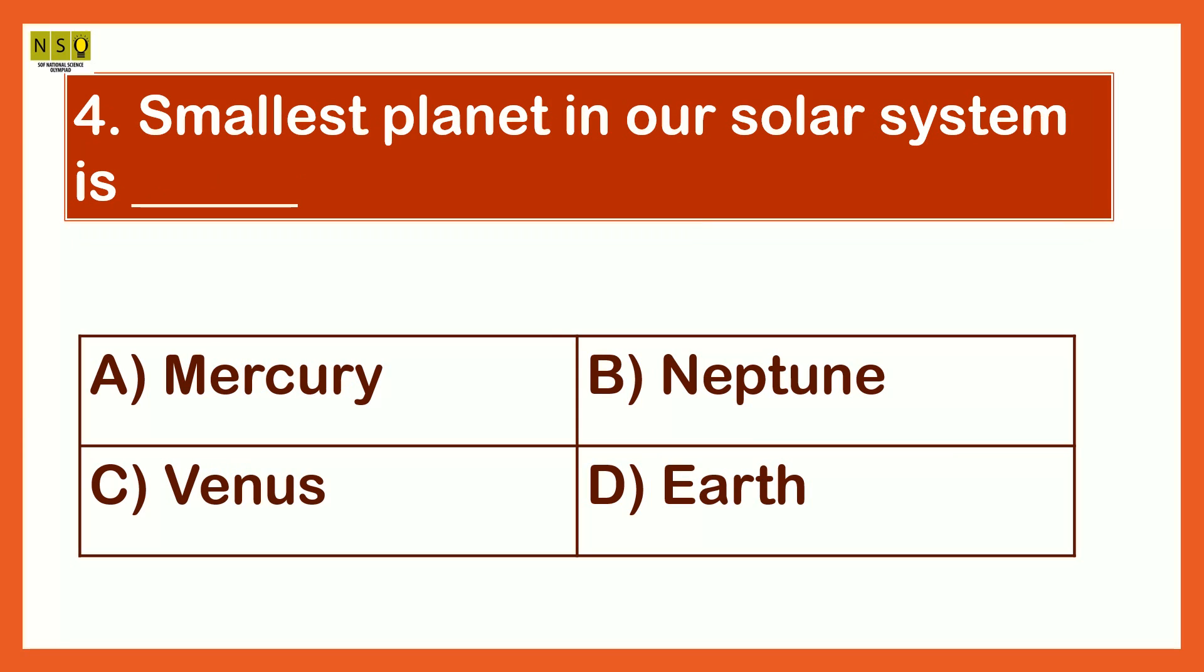The smallest planet in our solar system is Mercury, Neptune, Venus, Earth. The answer is Mercury.